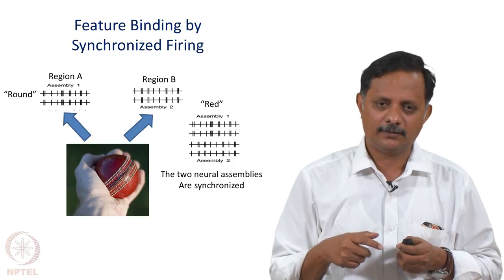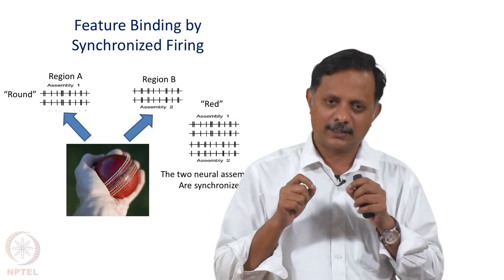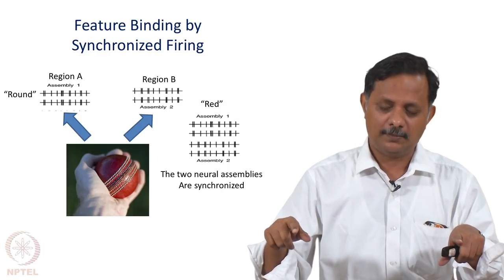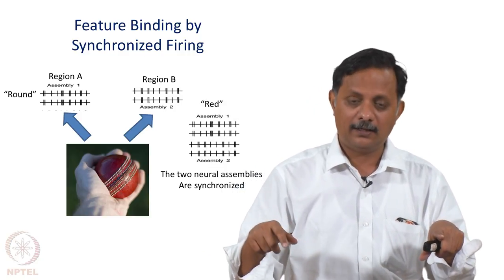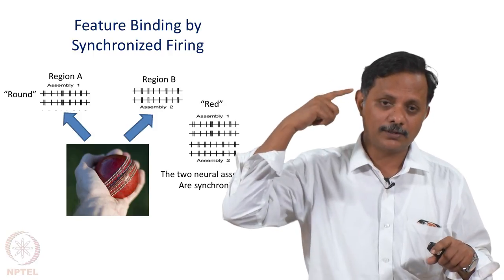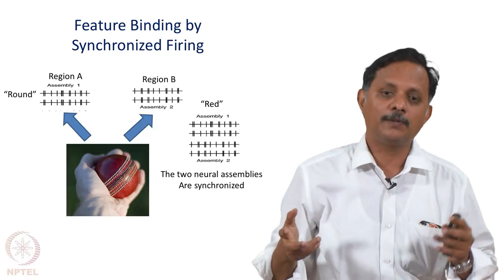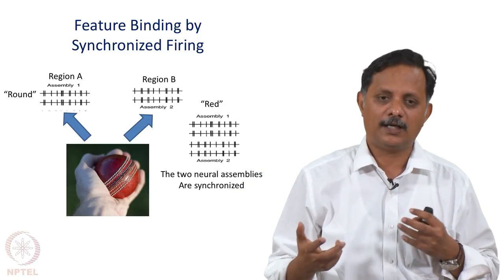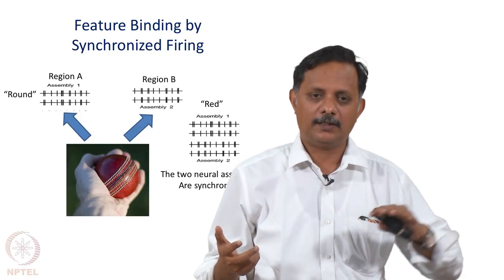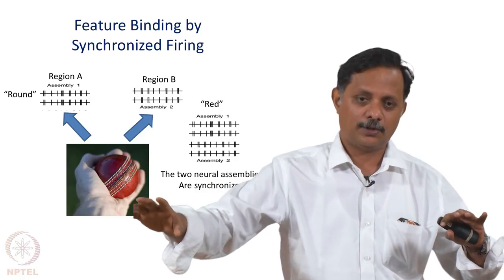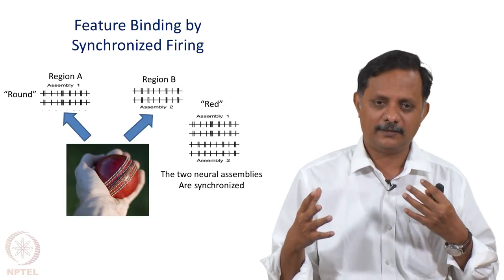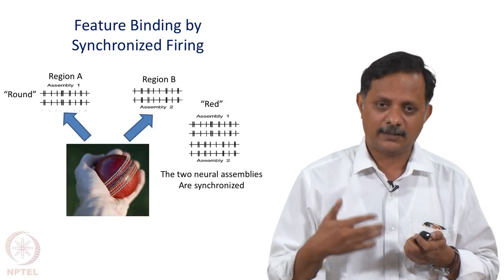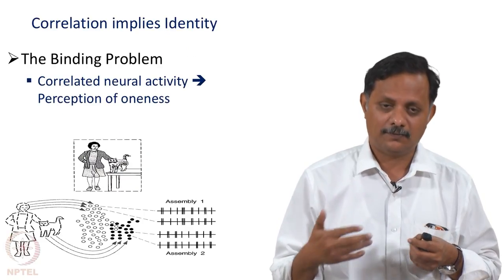This explains the rubber hand experiment: the experiment is cunningly designed so that the pattern of visual feedback from the rubber hand and the somatosensory feedback from the real hand are identical. Therefore the corresponding neural responses in different parts of the brain are also probably identical, leading the person to interpret both stimuli as coming from the same object — her actual hand. This is a mistake, because normally a replica of your hand would never be stroked in exactly the same way simultaneously. That false correlation creates a false interpretation of identity.